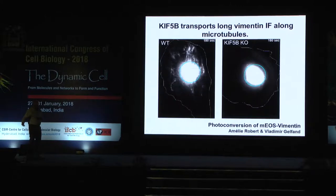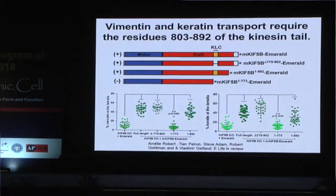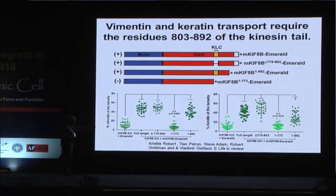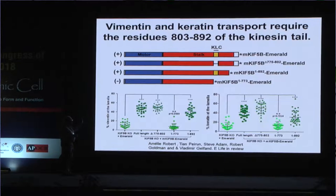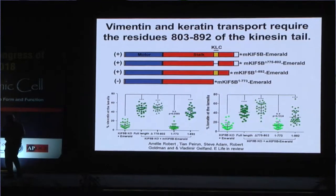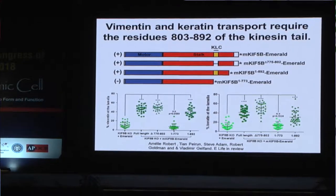This paper is now in eLife under review. We're learning — by truncating various domains in the heavy chain of kinesin — where the vimentin-binding domain is located, because we know that the light chain, which binds many cargos, is not involved in moving vimentin.